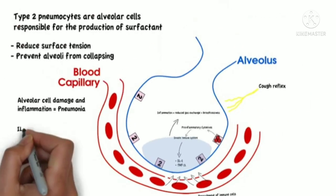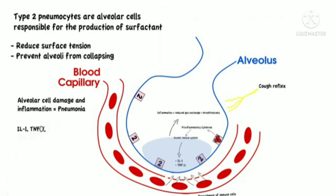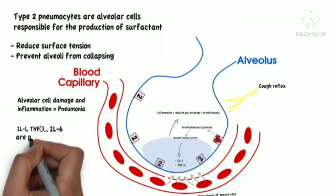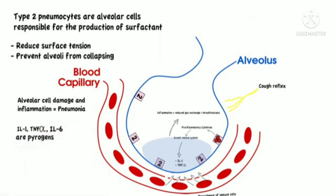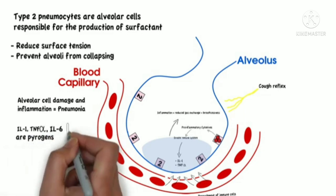Also, interleukin-1, tissue necrosis factor alpha, and interleukin-6 are pyrogens, meaning that they will induce fever.